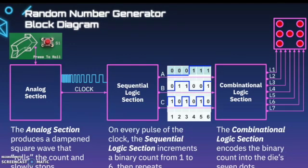This is the overall block view of our circuit. It starts with a push button that goes into the analog section. The analog section produces a dampened square wave that rolls the count and slowly stops. It starts with a really dense square wave that gets slower and slower, kind of like when you skip a stone and it's rippling out, eventually coming to a stop.